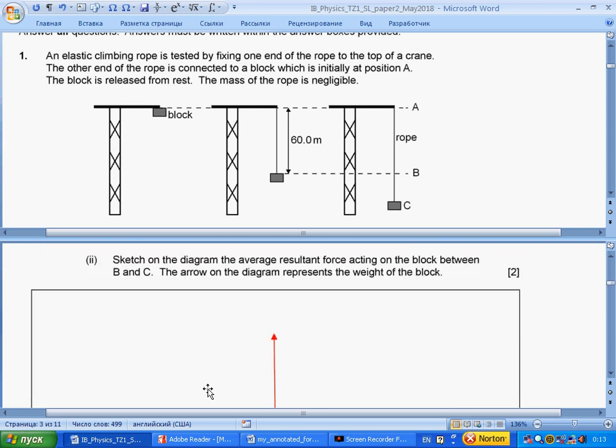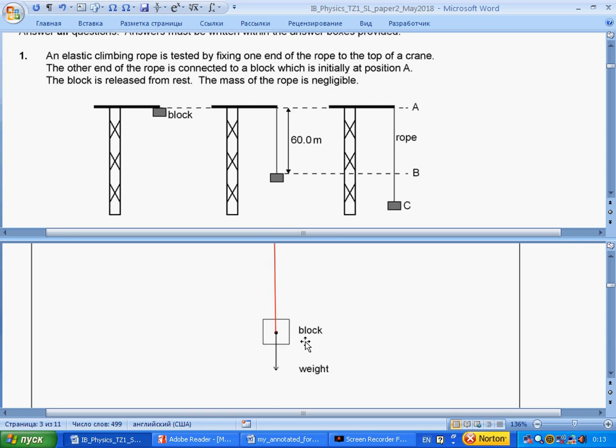Sketch on the diagram the average resultant force acting on the block between B and C. The arrow on the diagram represents the weight. If this is the weight, the tension will be much greater because the resultant force should be upward. We have the acceleration. And this is the picture.